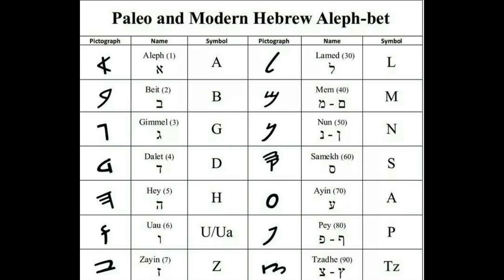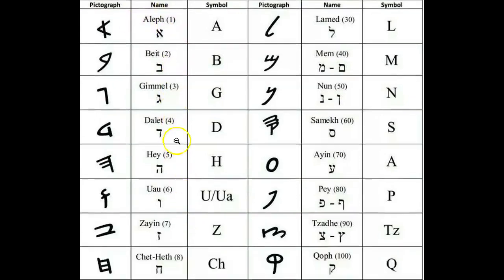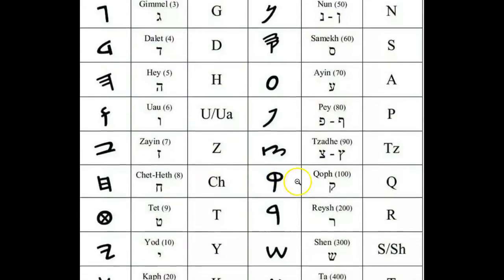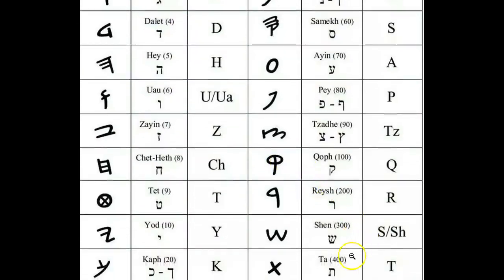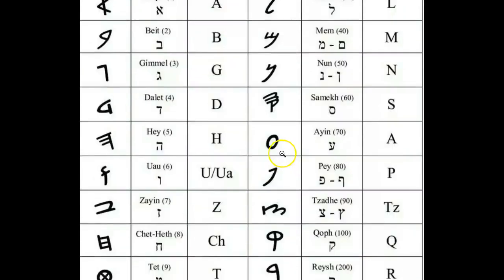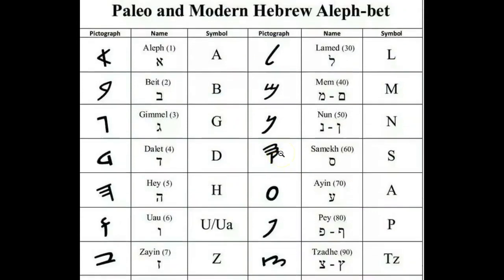For right now we're just going to break it down letter by letter. As you can see right here, the Hebrew alphabet has commonly 22 letters, and what's also interesting to note is that each of the letters has a numerical value, going all the way from 1 to 400, and I've talked about this in previous videos.